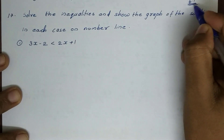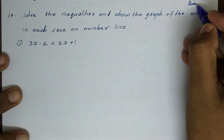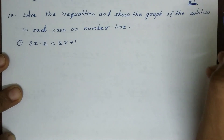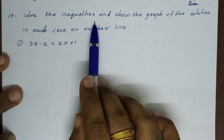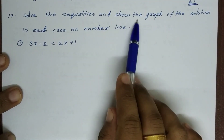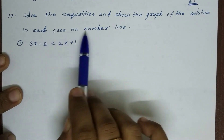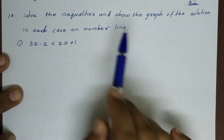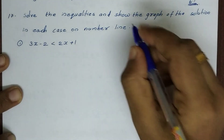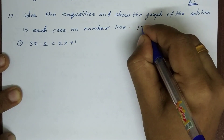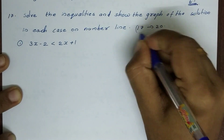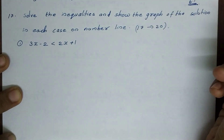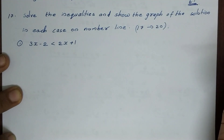We have 6.1 problems — problems 16 and 17. Solve the inequality and show the graph of the solution in each case on a number line. Then we have questions 17 to 20 and plot the graph.